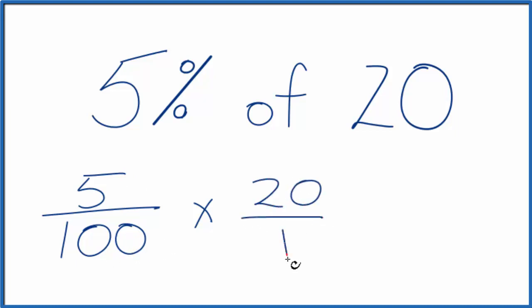But let's call it 20 over 1. Because 20 divided by 1, that's still 20. We haven't changed the actual number, just the way we write it.